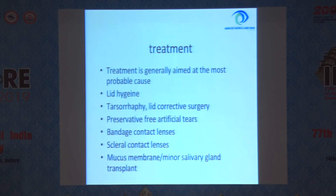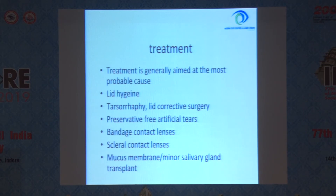Treatment is generally aimed at the most probable cause. Lid hygiene is important because lid abnormalities can be primary or, with recurrent inflammation, eyelids tend to get inflamed. Tarsorrhaphy and lid reconstructive surgery in case of exposure keratitis or neurotrophic keratitis. Preservative-free artificial tears are important. Bandage contact lens as and when needed. Scleral contact lenses are a mainstay of treatment in keratitis associated with SJS. And mucous membrane and minor salivary gland transplant may also be employed.